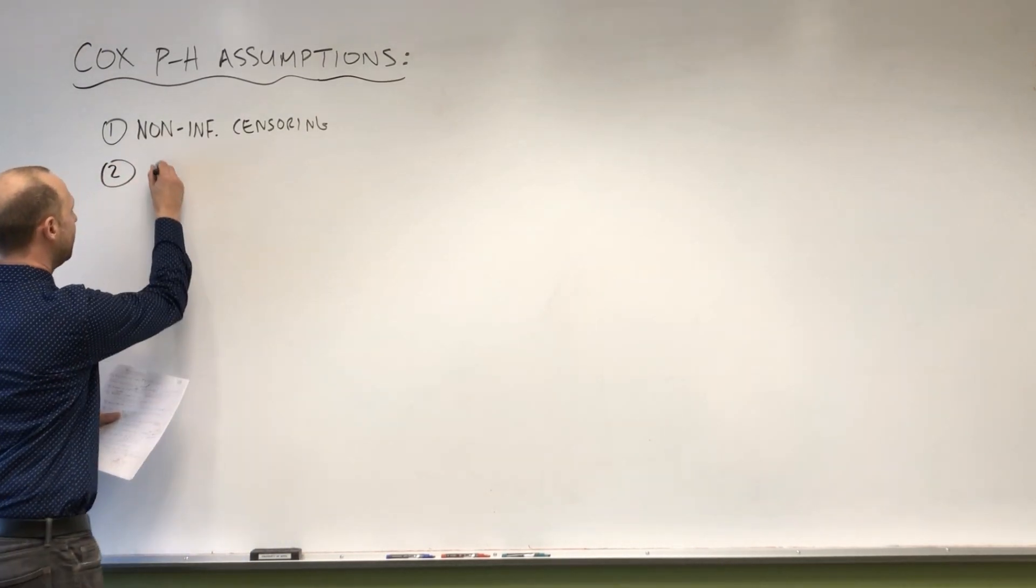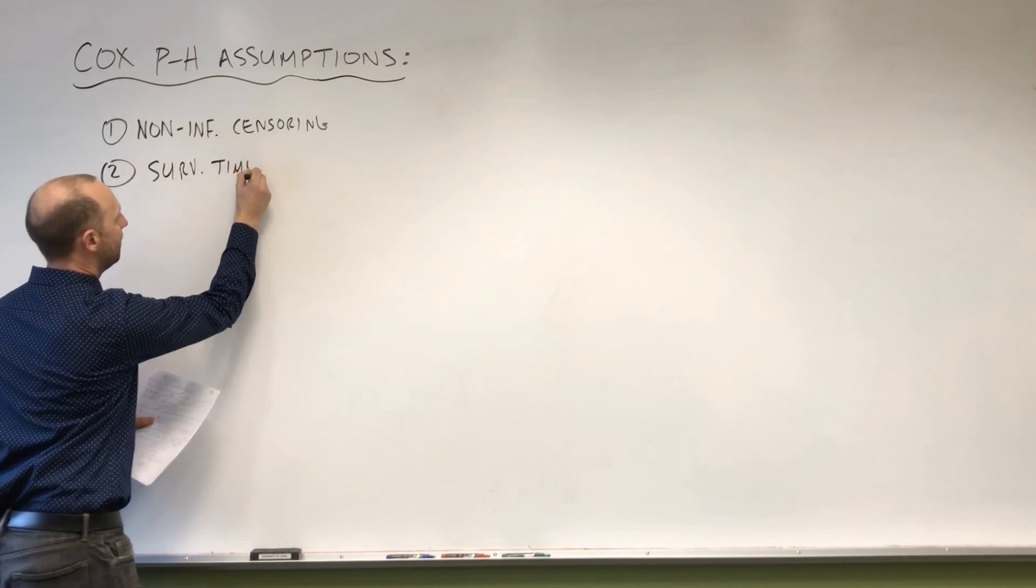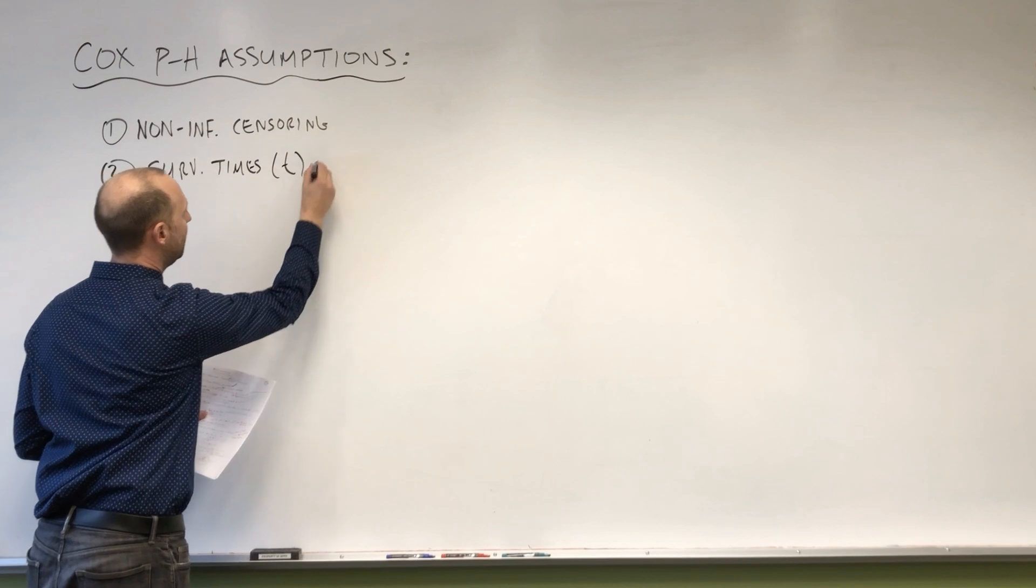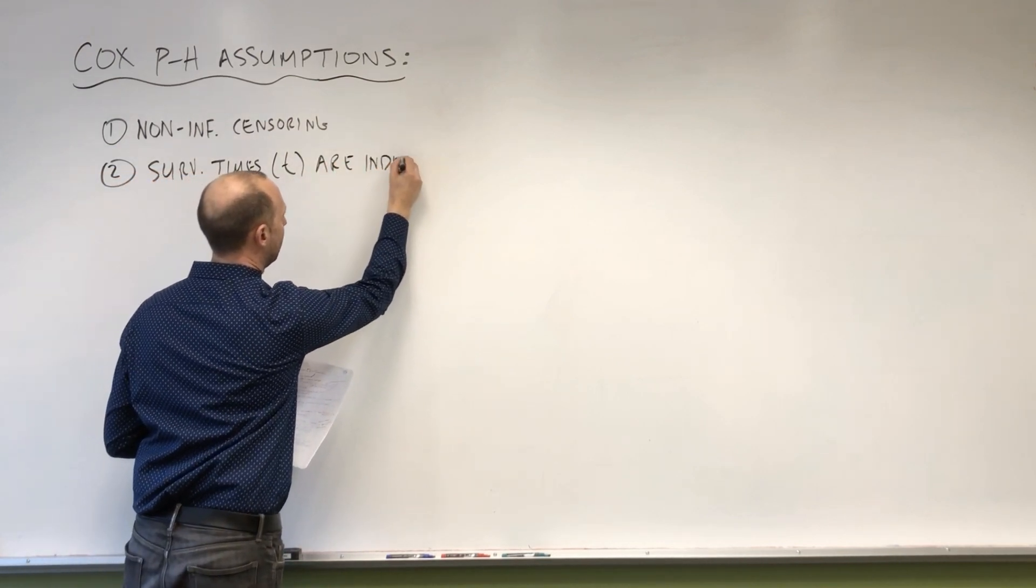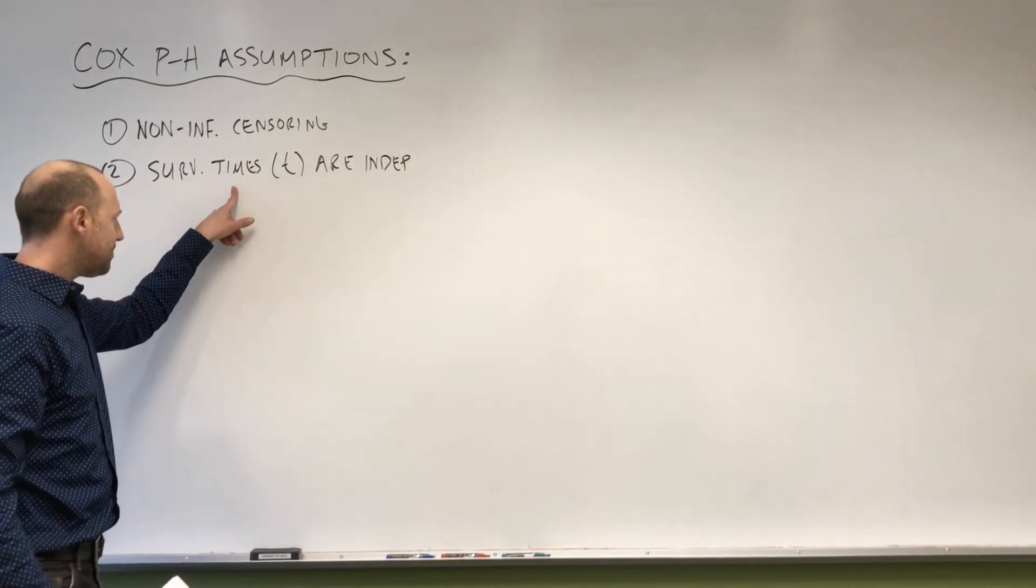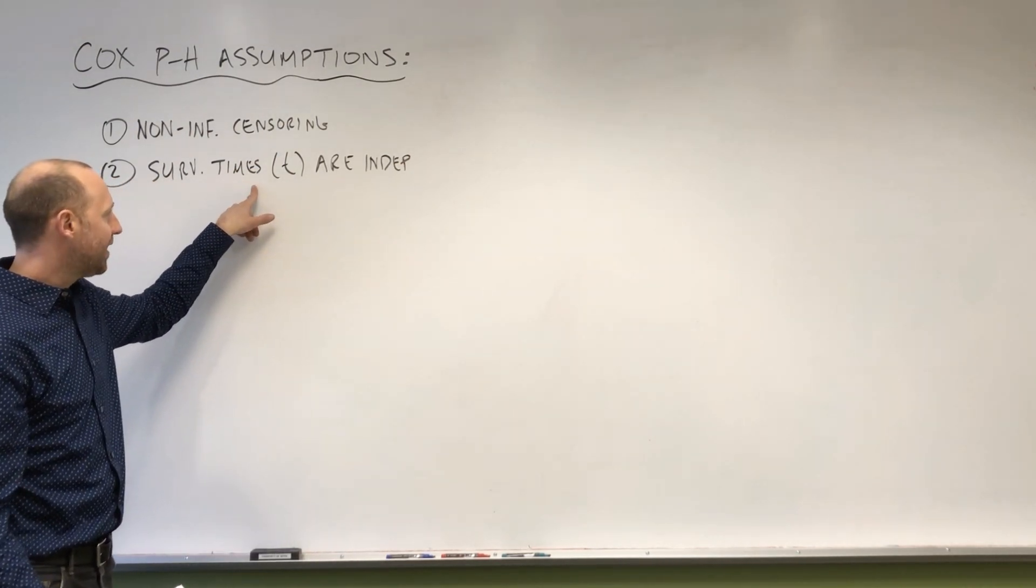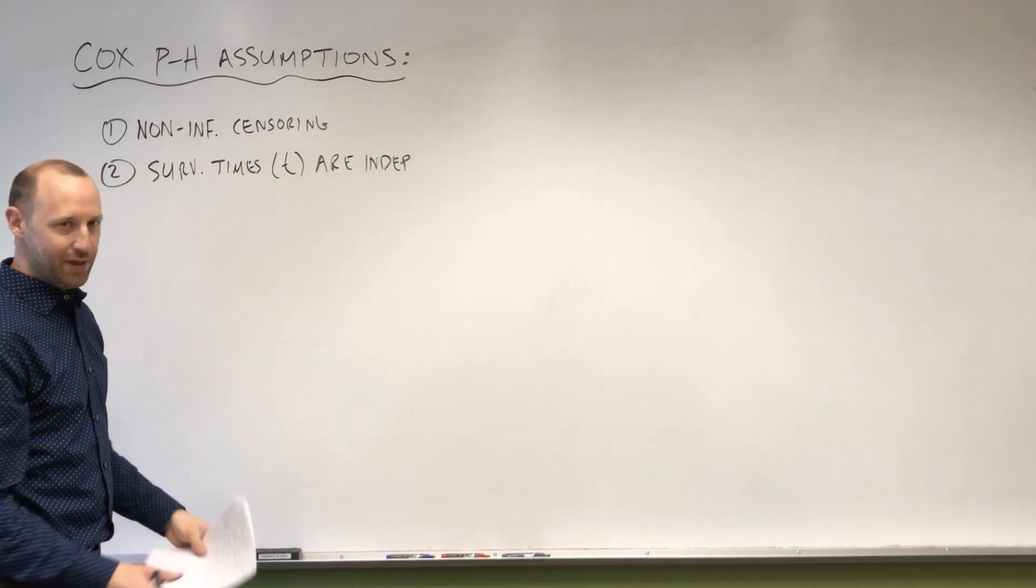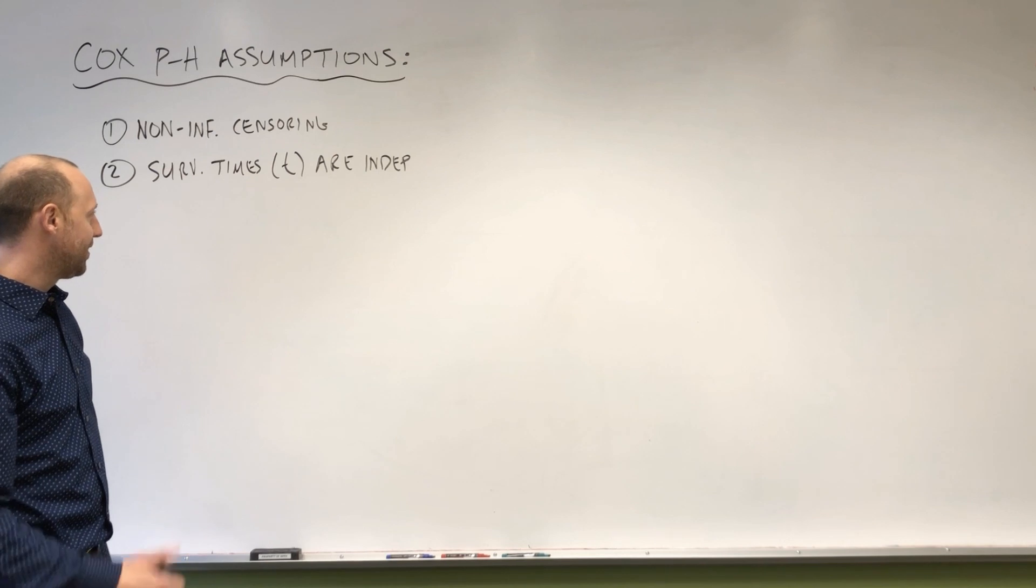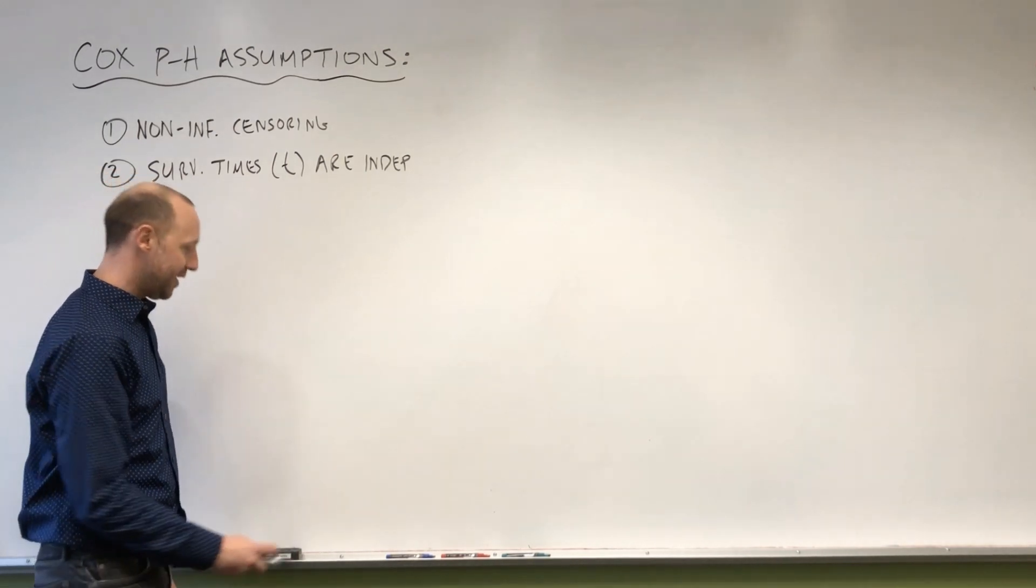Second assumption is that the survival times, little t, these are independent. And this assumption of independent observations, we're making that assumption, as you've seen throughout the course, in pretty much every regression model that we've been working with. That person one survival time does not depend on person two, person three, and so on.